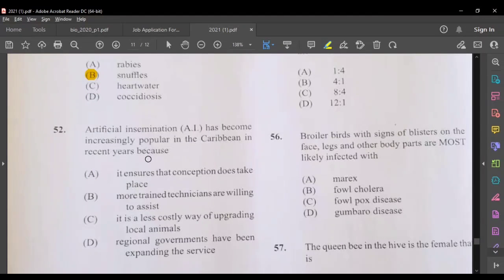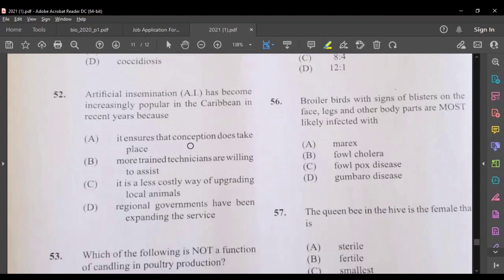Artificial insemination has become increasingly popular in the Caribbean in recent years because it ensures that conception does take place, more trained technicians are willing to assist, it is a less costly way of breeding local animals, or regional government have been expanding the service. I think the most suitable answer here would be A.